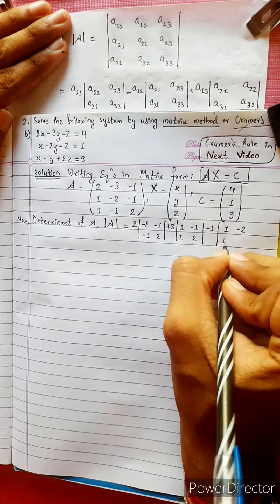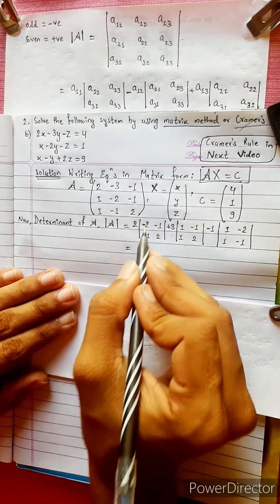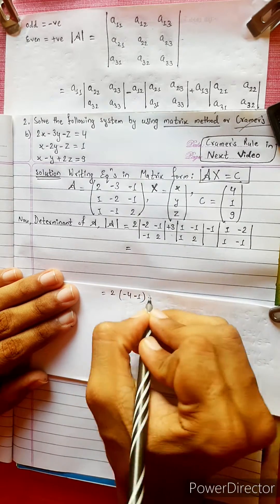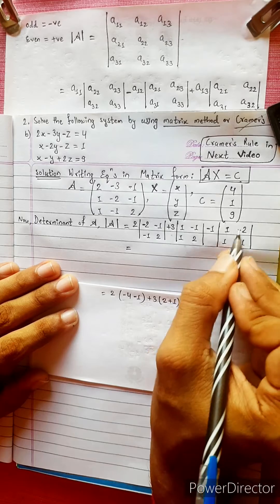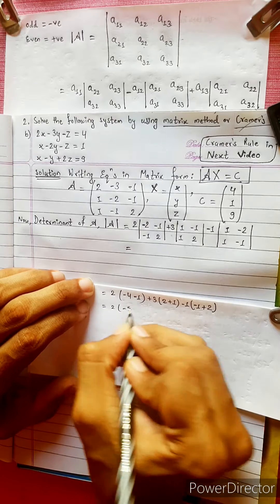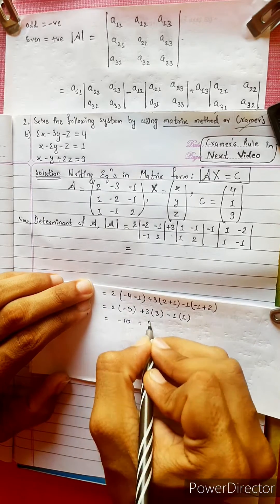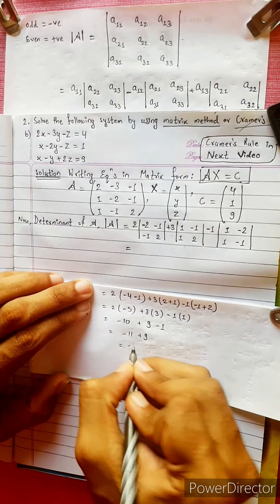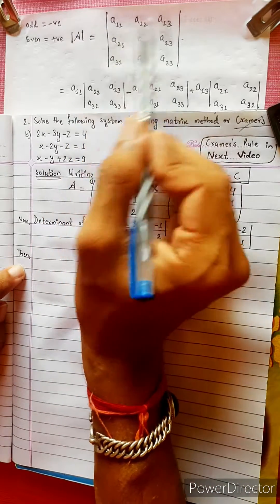1 minus 2, 1 minus 1. We will use the same steps. 2 into 2 gives minus 4. Using the formula: 5 into 10, 3 into 9, minus 1 equals 1, minus 1, minus 2, minus 2. Minus 1 equals 10. So we have 4 elements like this from the 3 by 3 matrix.